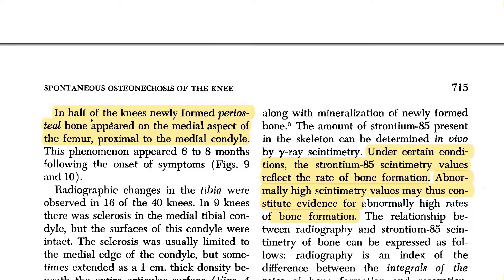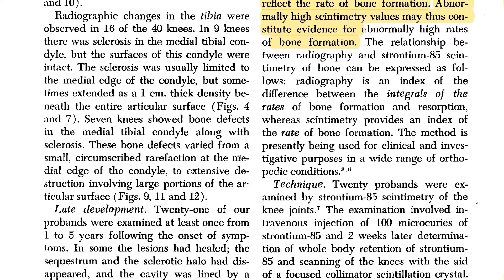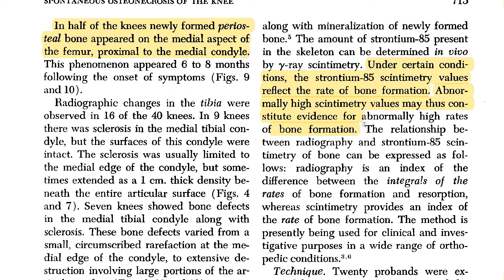An important finding: in half of the knees on radiographs, newly formed periosteal bone appeared on the medial aspect of the femur, proximal to the medial condyle, six to eight months following onset of symptoms. They also explain what the scintigraphy uptake means — under certain conditions, strontium-85 scintigraphy values reflect the rate of bone formation, so abnormally high scintigraphy values constitute evidence for abnormally high rates of bone formation.